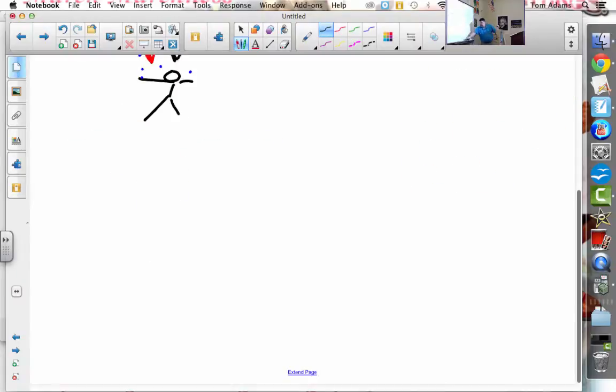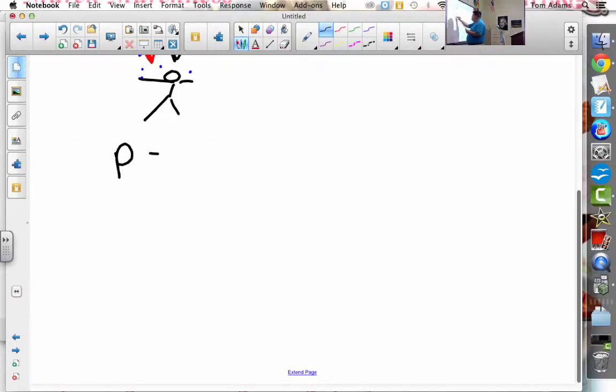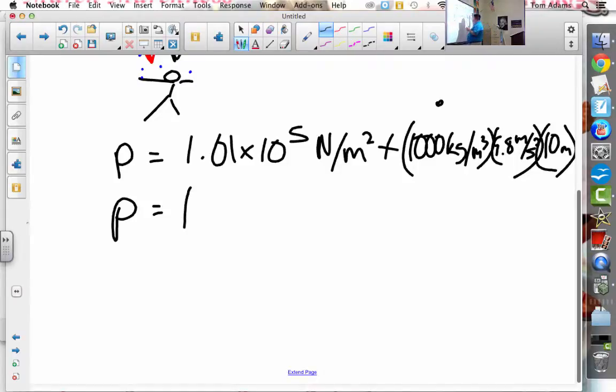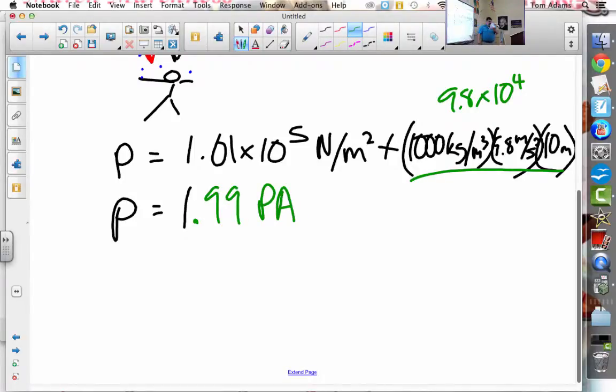So to complete this, to find the absolute pressure, we would say that the absolute pressure would be the atmospheric pressure, which is 1.01 times 10 to the 5th newtons per meter squared, plus the density of water, which is 1,000 kilograms per meters cubed, times 9.8, the acceleration due to gravity meters per second squared, times 10 meters. And then I just multiply that all out. This right here ends up becoming 9.8 times 10 to the 4th. This whole thing right here ends up becoming 9.8 times 10 to the 4th, which, when you add that to this, it becomes 1.99 times 10 to the 5th.